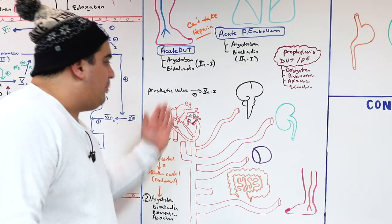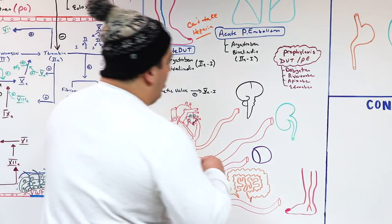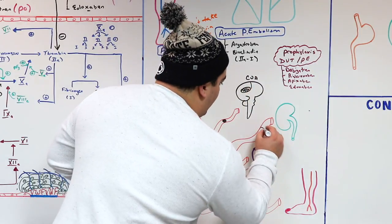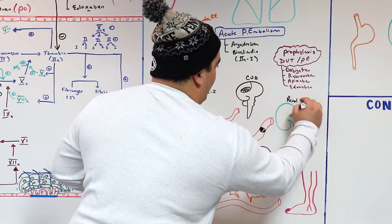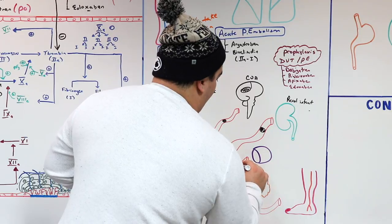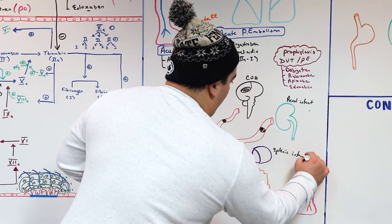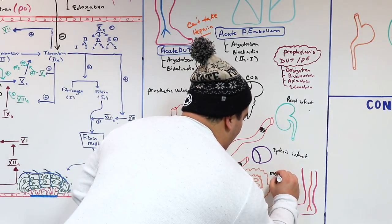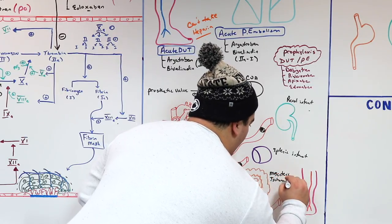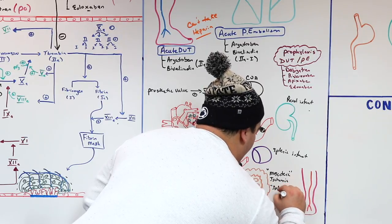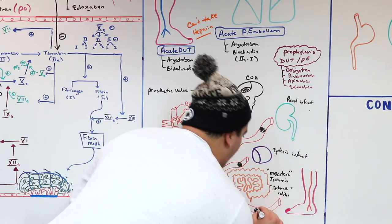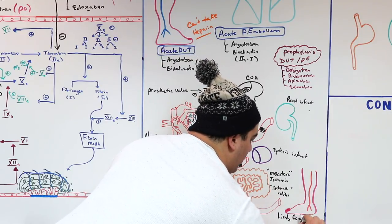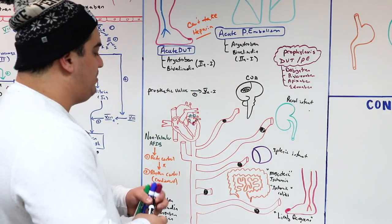Anticoagulating non-valvular AFib patients protects against thromboembolism: a clot traveling to the brain causes a CVA; to the renal circulation causes renal infarct; to the splenic circulation causes splenic infarct; to the superior or inferior mesenteric arteries causes mesenteric ischemia or ischemic colitis; and an acute arterial embolus to the leg can lead to limb gangrene.